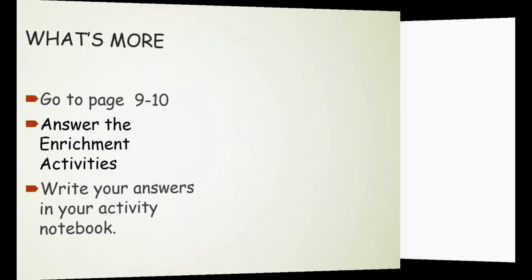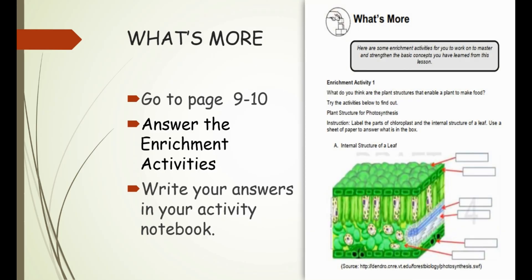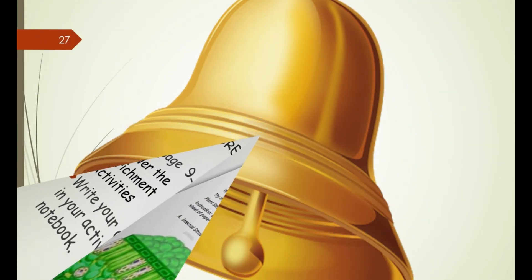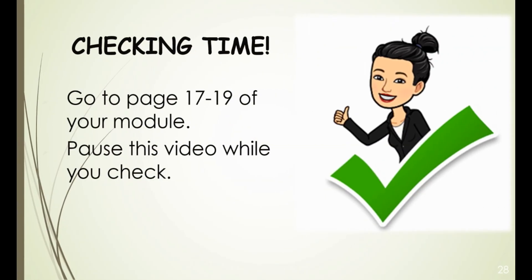Let's apply what you've just learned about photosynthesis. Go to pages 9 to 10 and answer the enrichment activities. Write your answers in your activity notebook. Are you ready? Let's go! Were you able to answer all items in "What's More"? Great, let's see how you did. Go to pages 17 to 19 of your module and pause this video while you check your work. Did you get a perfect score? Awesome! Almost perfect? That's alright — let's do better next time.